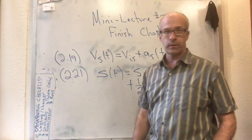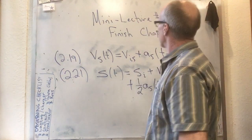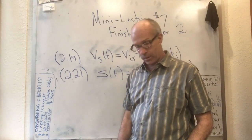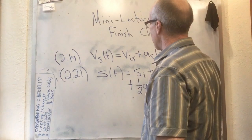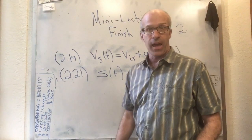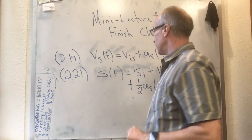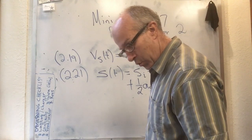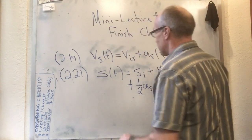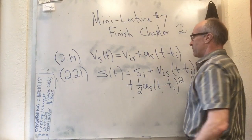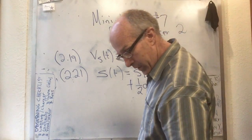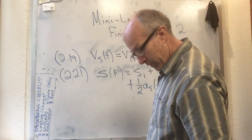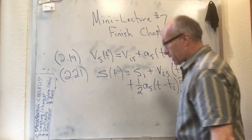This is take seven of mini lecture number seven. I'm going to finish chapter two in a lightning fast fashion by writing down the answer and then showing that the answer works. That's kind of what Knight did too. If you look at equations 2.19 and 2.21, equation 2.19 is what I've written up here except I've written it my own way, and equation 2.21 is what I've written here. Let's compare Knight's way of writing it and my way of writing it.